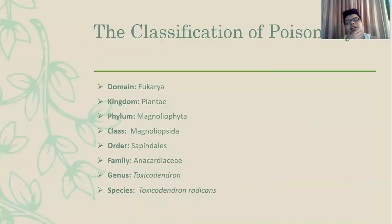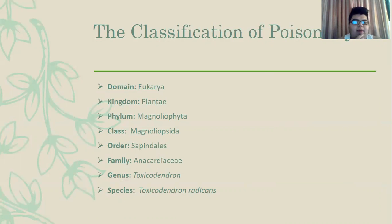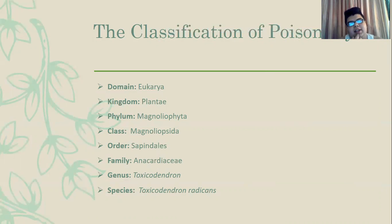The classification of Poison Ivy: the domain is Eukarya, the kingdom is Plantae, the phylum is Magnoliophyta, the class is Magnoliopsida, the order is Sapindales, the family is Anacardiaceae, the genus is Toxicodendron, and the species is Toxicodendron radicans.